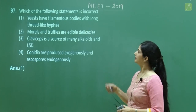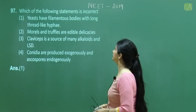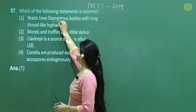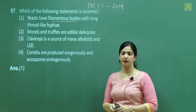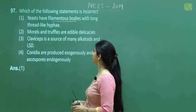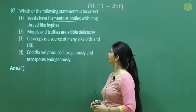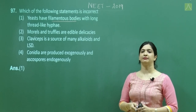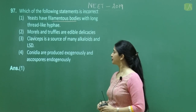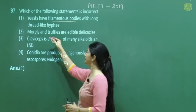Question number 97: Which statement is incorrect? Option 1 — yeast have filamentous bodies with long thread-like hyphae — this is incorrect, because yeast is unicellular fungi belonging to class Ascomycetes. Options 2, 3, and 4 are all correct: morels and truffles are edible, Claviceps is a source of alkaloids and LSD, and conidia are produced exogenously while ascospores are produced endogenously. The incorrect statement is option 1.